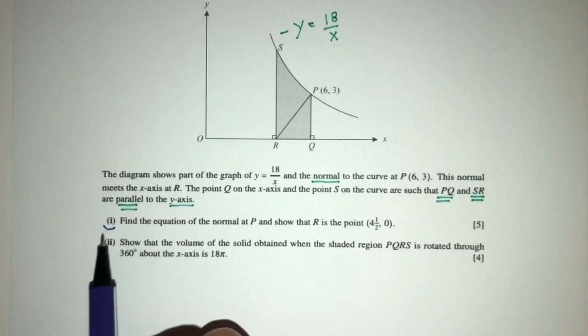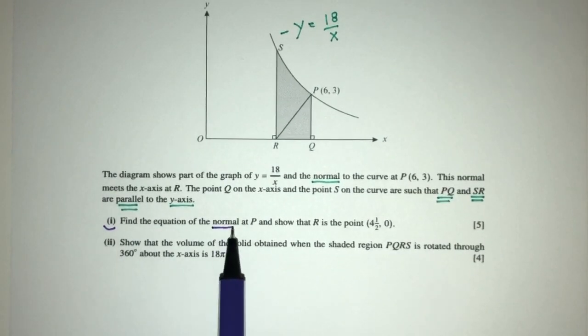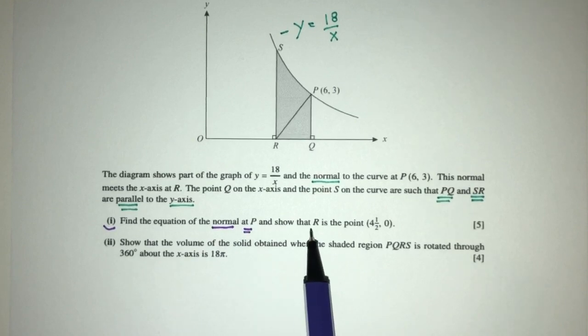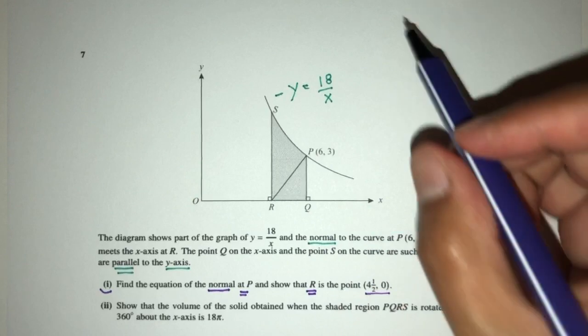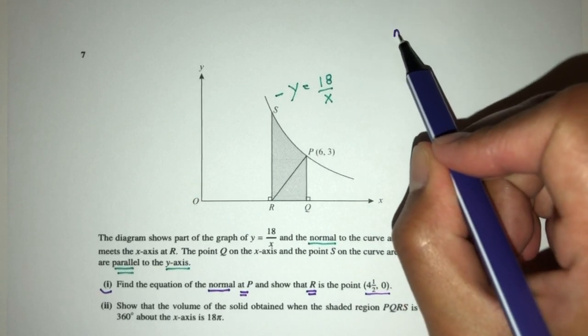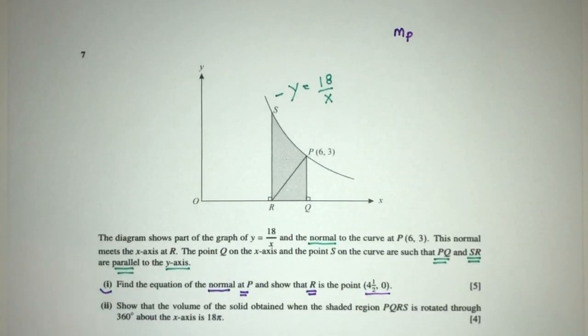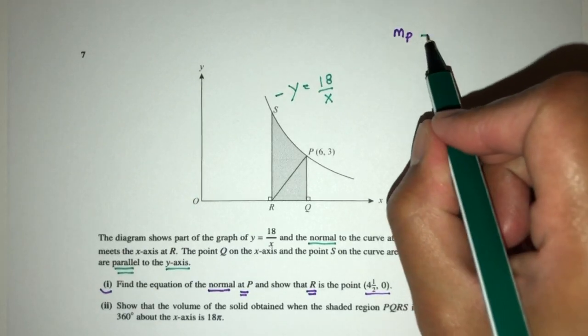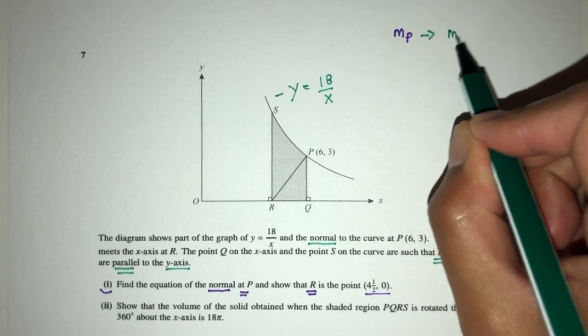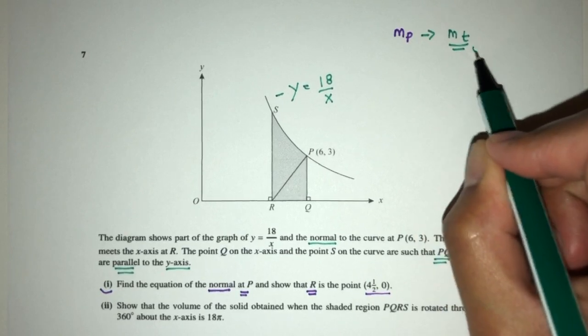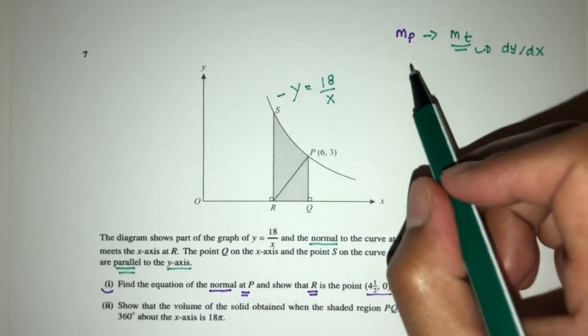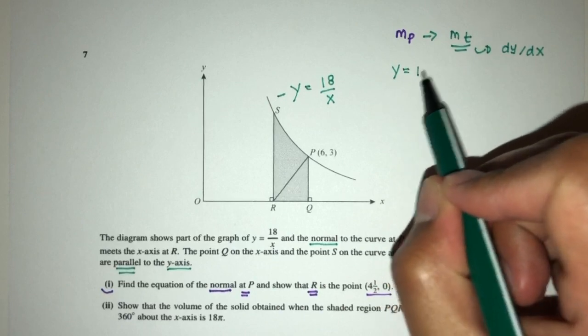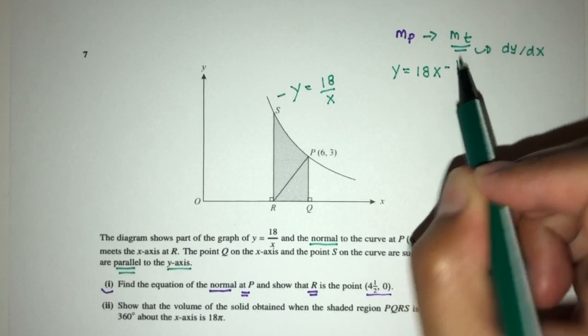Now part one, we have to find the equation of the normal at P. To find the equation of a straight line, we must first find the gradient of P. Now because it is a perpendicular line, we will first have to find the gradient of the tangent, which is dy/dx. Y can be rewritten as 18x to the power minus 1.